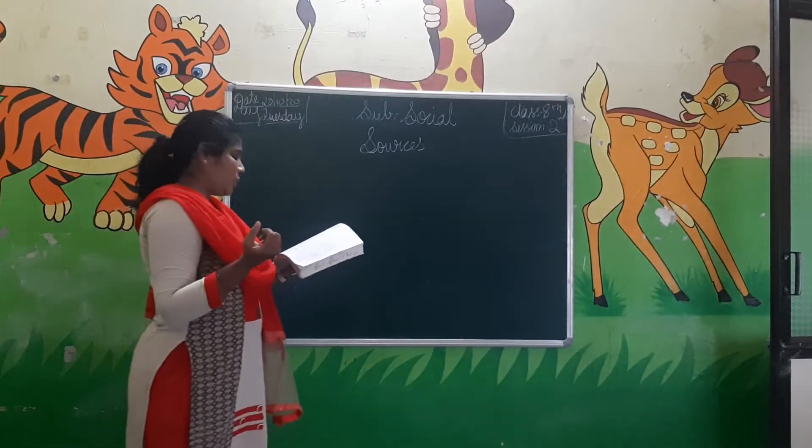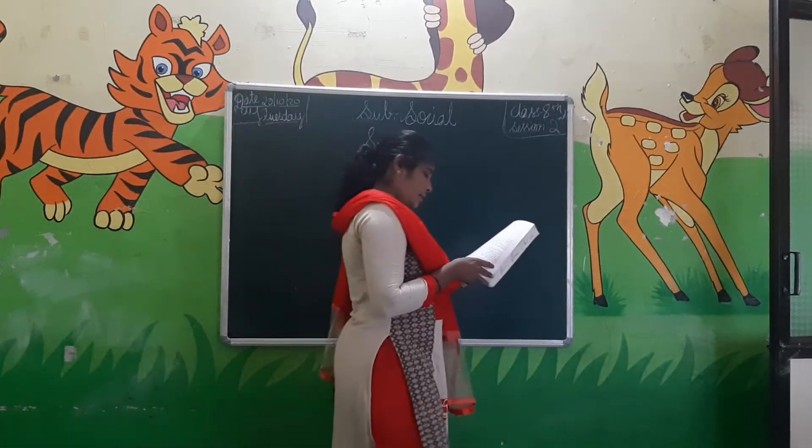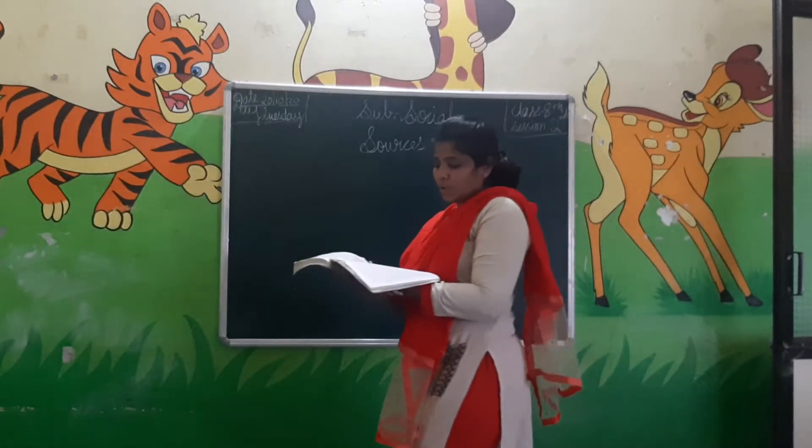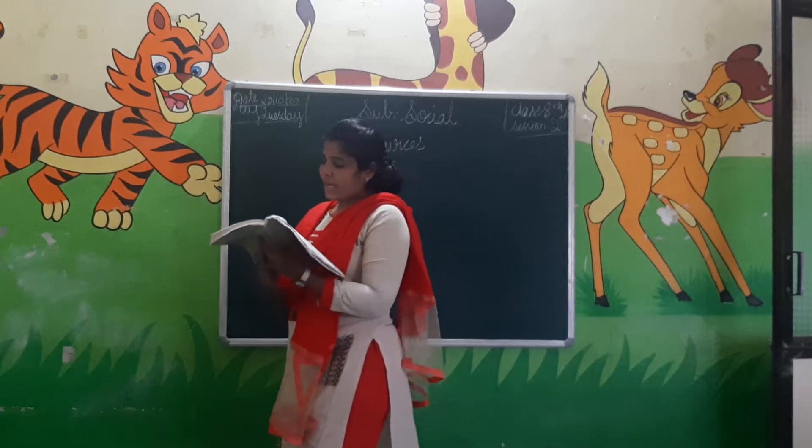How many types of sources do we have? In sources we have namely two types: literary sources and archaeological sources. In literary sources, it has been divided into two: written literature and oral literature. In written literature we have native literature and foreign literature.